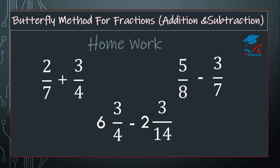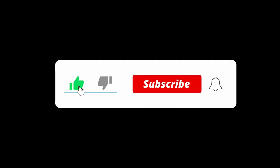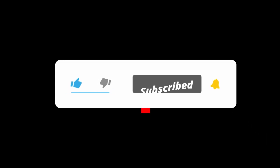There is homework for you. Question 1: 2 over 7 plus 3 over 4. Question 2: 5 over 8 minus 3 over 7. Question 3 — mixed fractions: 6 and 3 over 4 minus 2 and 3 over 14. Write the answer in the comment section. Thanks for watching the video. I shall be grateful if you like, share, and subscribe to this channel. Have a nice day. We'll see you next time.